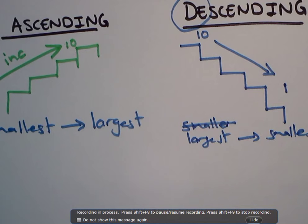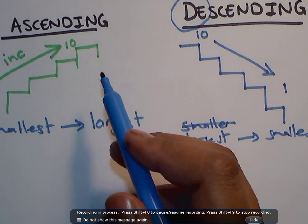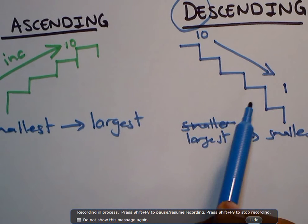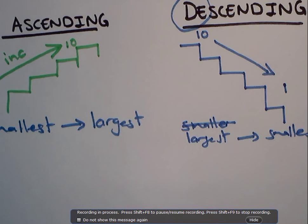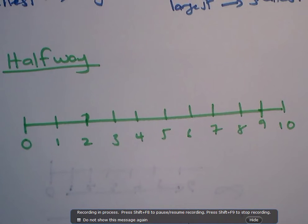That's how you would do this. So ascending is going up the staircase, descending is going down the staircase. Next we're going to compare the halfway. Halfway basically means that it's in the middle. You are having half of it, it's perfectly in the middle.